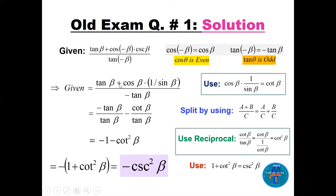Cosine of beta times 1 over sine of beta is cotan(β), divided by tan(β), which becomes cotan²(β). So we have 1 minus 1 minus cotan²(β), giving minus 1 minus cotan²(β). Taking minus as a common factor, and using the formula 1 + cotan²(β) = csc²(β), the answer becomes negative csc²(β).